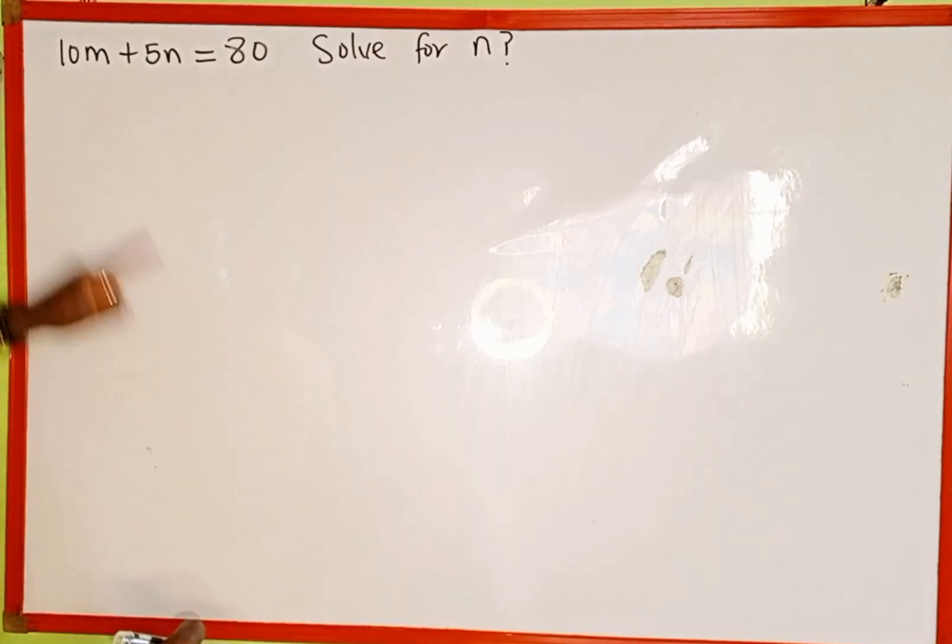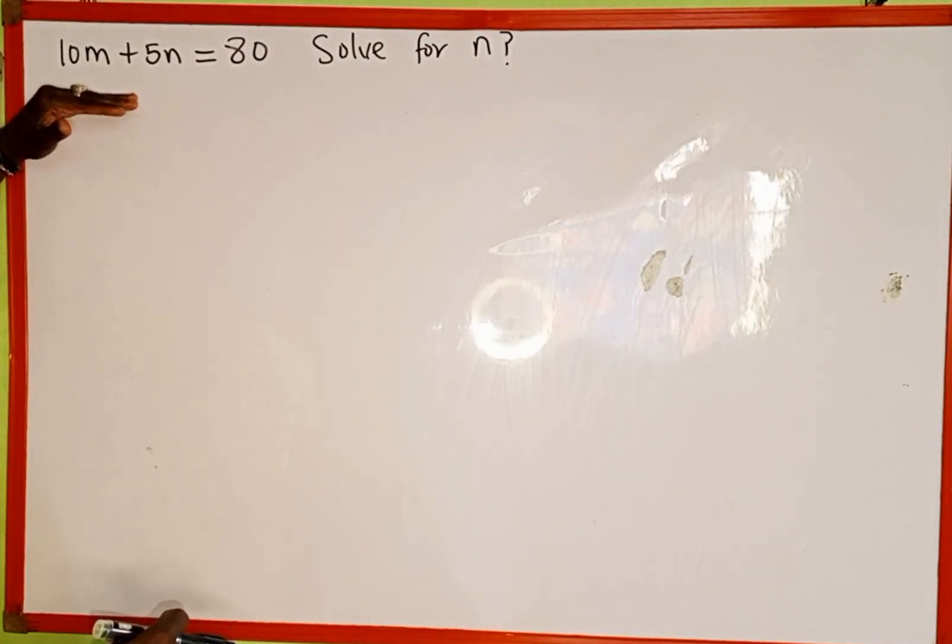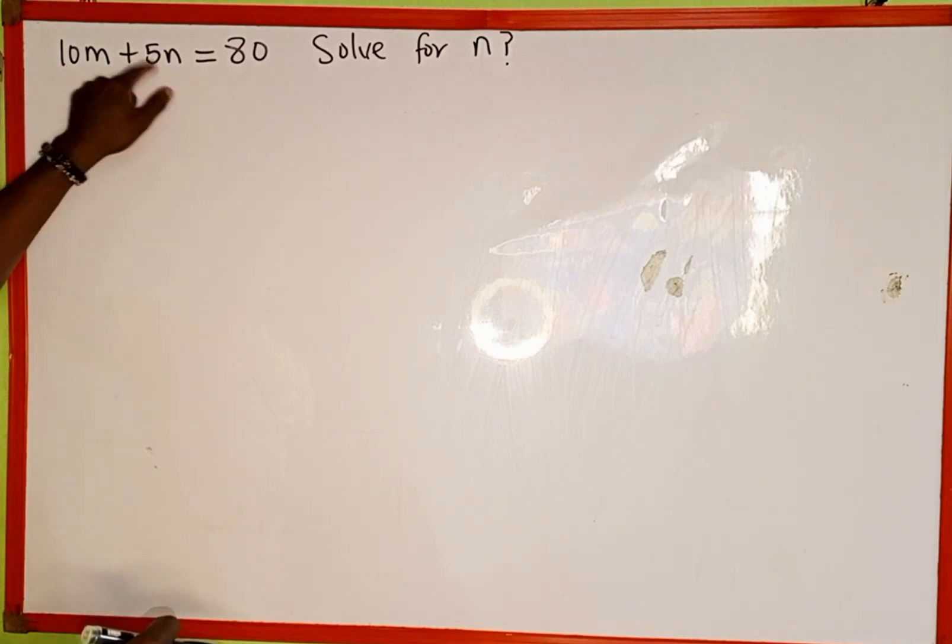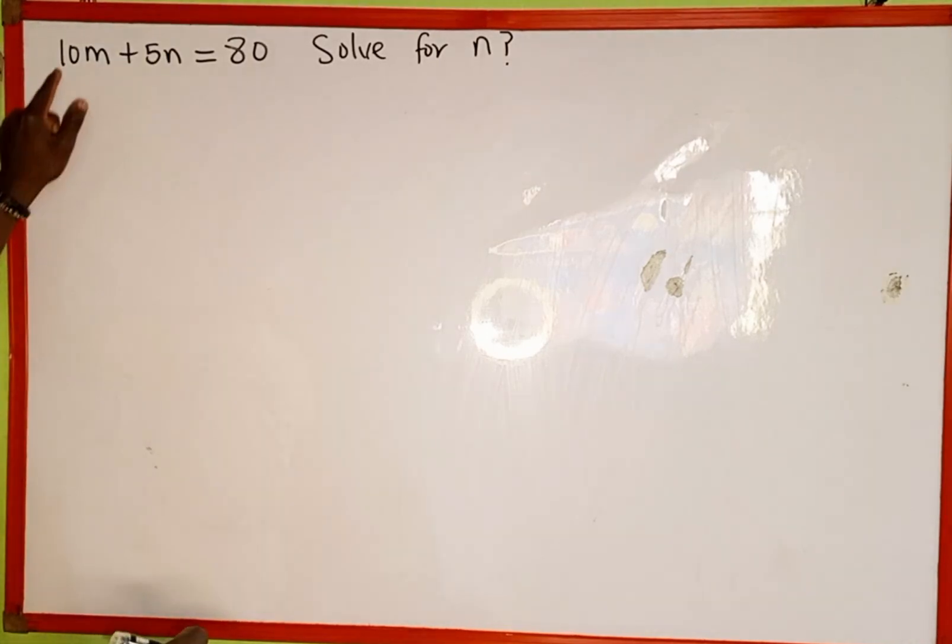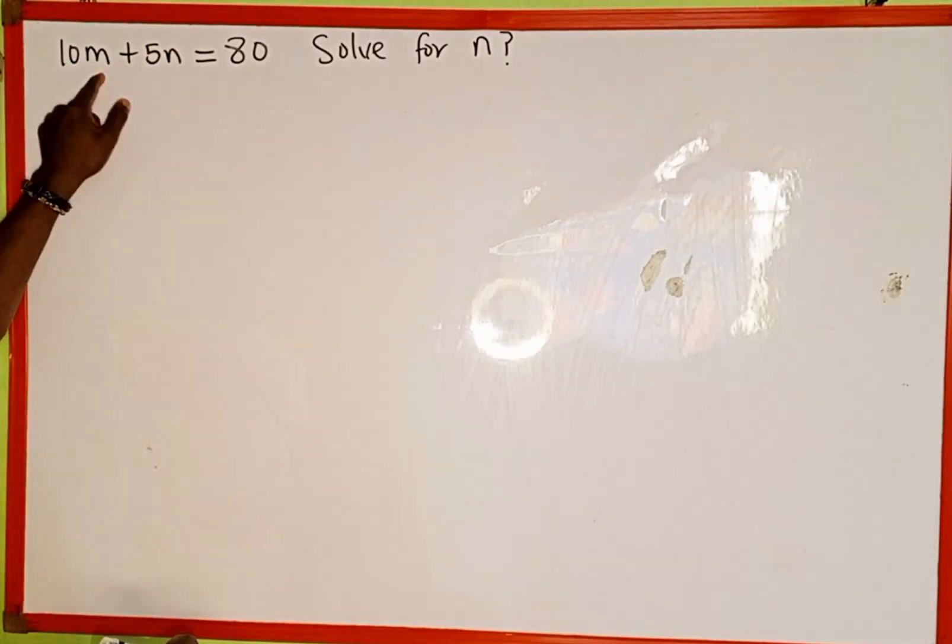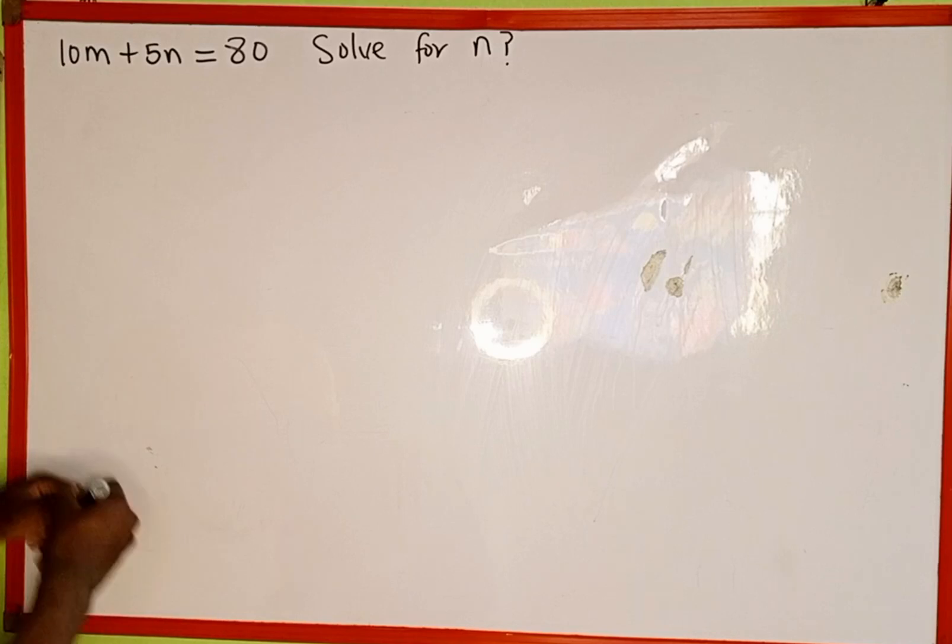The first thing we're going to do - if you check the left-hand side of this equation, 10m plus 5n, we cannot add them together because the variables are different. So the next thing to do is to take this 10m to the right-hand side of the equation.